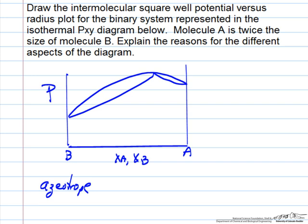It wants to explain the different aspects of the corresponding intermolecular potential that corresponds to this PXY diagram. So we want to use the fact that the radius of A is twice the size of the radius of B.